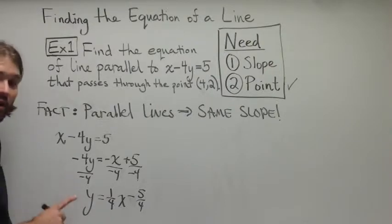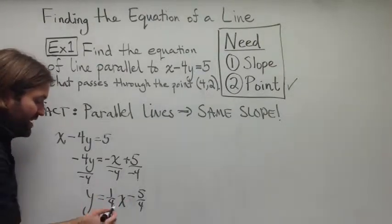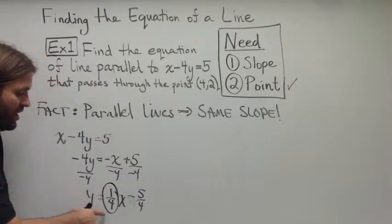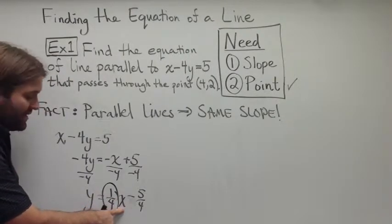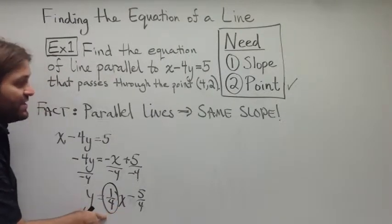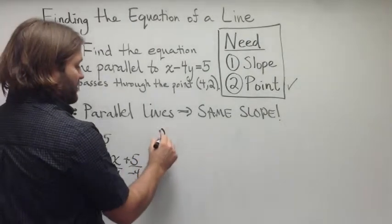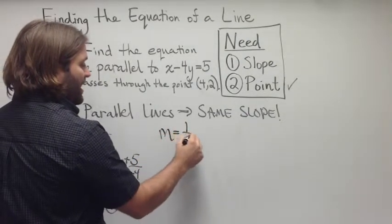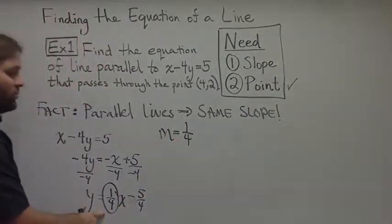The only part of this equation that we're interested in is right here. The slope is always the number that precedes the x variable, and so this is the slope that we need. So, the slope of the line that we're trying to find is 1 fourth.